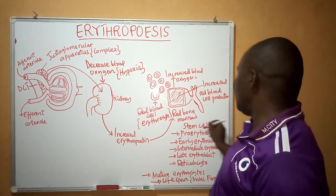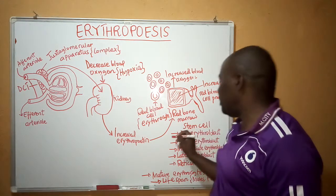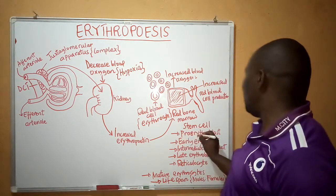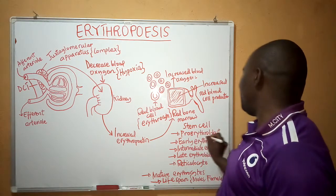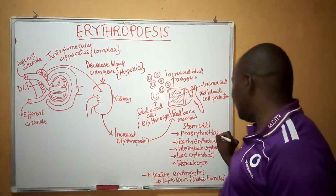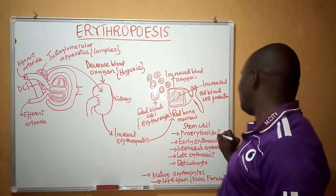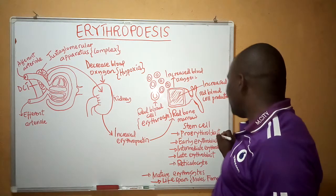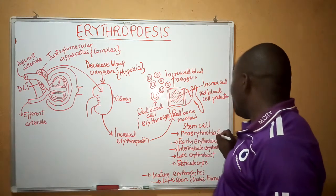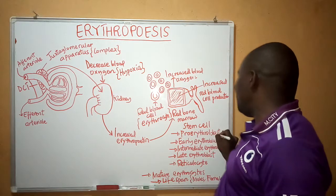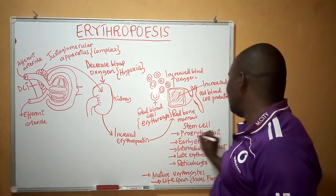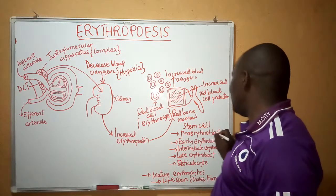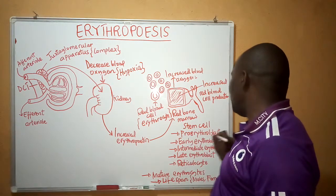The central portion of the bone is composed of certain cells known as stem cells. Stem cells are first transformed into what is called pro-erythroblast. Pro-erythroblast is very large in terms of size, and one pro-erythroblast is going to produce approximately 16 erythrocytes or 16 red blood cells.